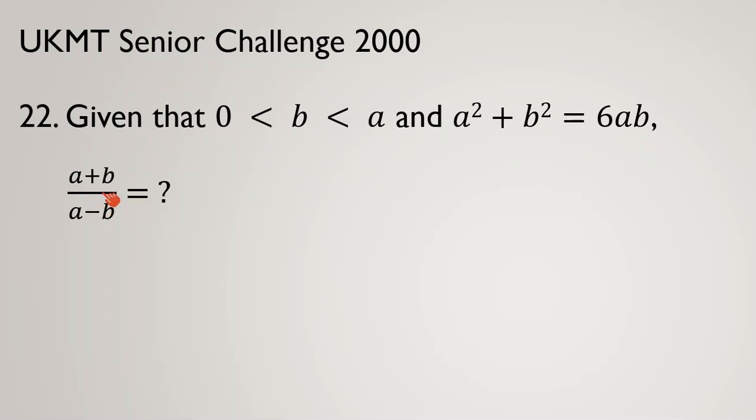When we see this problem, we have a plus b here, but we don't have that directly - we have a squared, b squared, 6ab. So we have squares and products. Here, a minus b. So how can we relate a plus b to a squared, b squared, and ab?